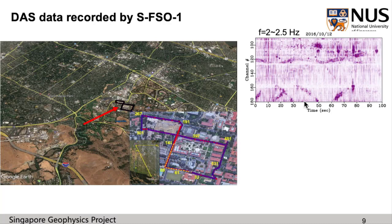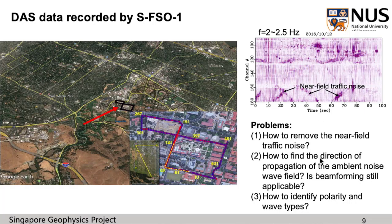This is a piece of 100-second DAS data after being applied a 2 to 2.5 Hz bandpass filter. We can see the near-field traffic noise is quite strong. The near-field traffic noise needs to be removed because it directly impacts the array, does not contain subsurface medium information, and will contaminate the far-field noise. Besides, it violates the plane wave assumption. So the problems are: how to remove the near-field traffic noise since it is very difficult to be filtered; how to find the direction of propagation of the ambient noise wave field; whether beamforming is still applicable; and how to identify polarity and wave types.